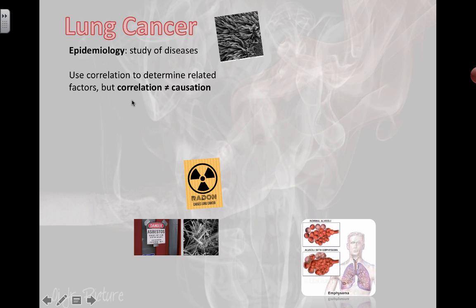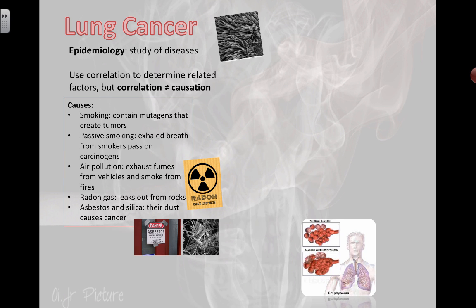We use correlation to determine related factors. But remember, just because two variables have an r-squared coefficient of 1.0 and it's a perfect correlation, it doesn't necessarily mean that one is causing the other. You really need to investigate that further. So, causes of lung cancer: smoking contains mutagens that can cause DNA to mutate, and that can create tumors when you start messing with the genes that control the cell cycle.